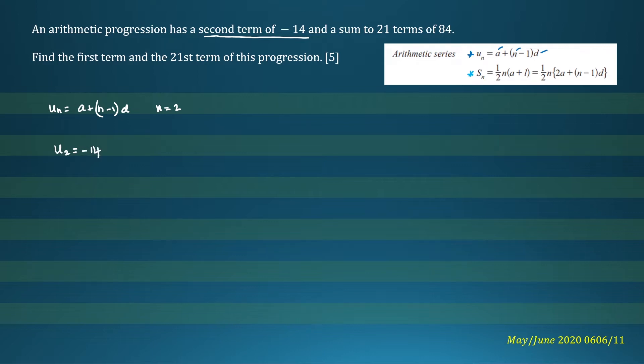Now we can form an equation. We can write negative 14 equals a plus (n minus 1), which is 2 minus 1, times d. So we can see that a plus d equals negative 14. This is equation 1.